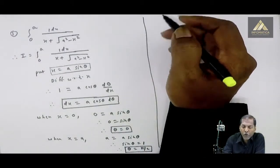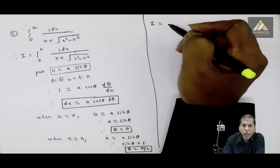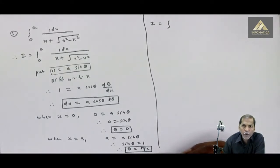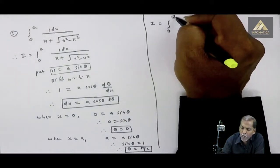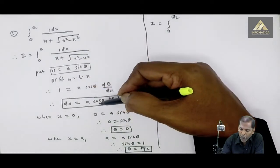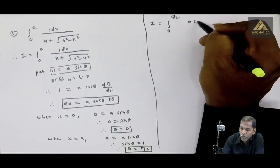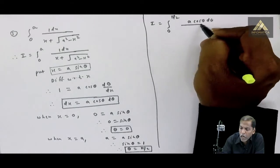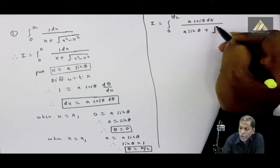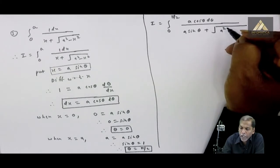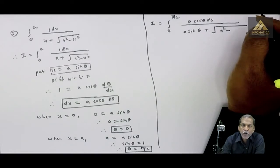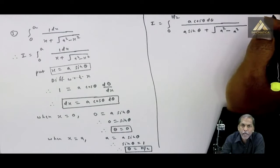Next step: the question is completely changed. I equals the integral from 0 to pi by 2, replacing the original limits 0 to a with 0 to pi by 2. The numerator dx is replaced by a cos theta d theta. The denominator x is replaced by a sin theta, plus square root of a square minus a square sin square theta.